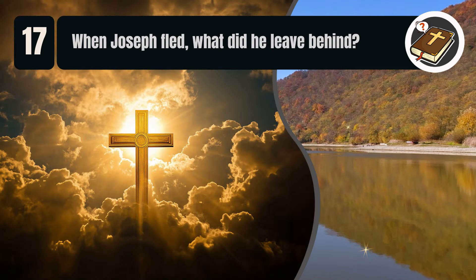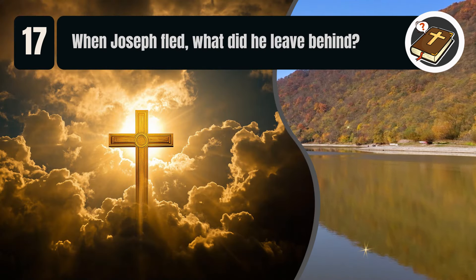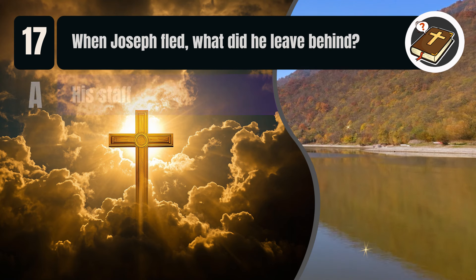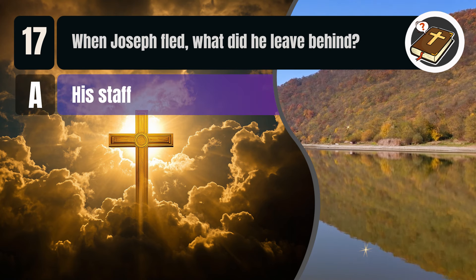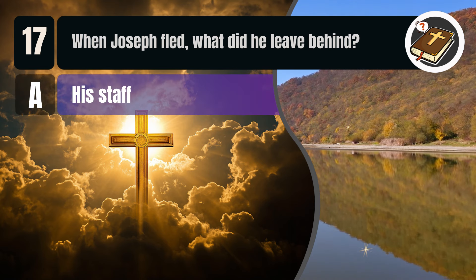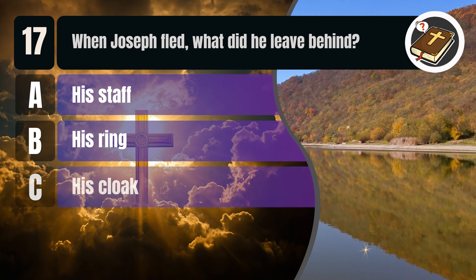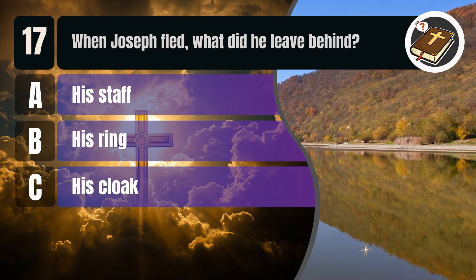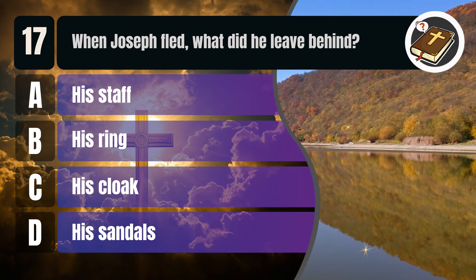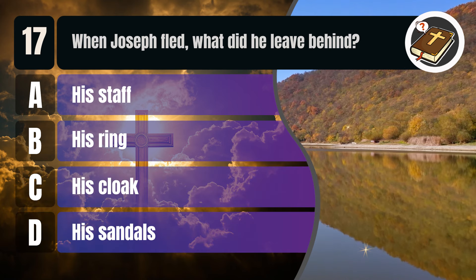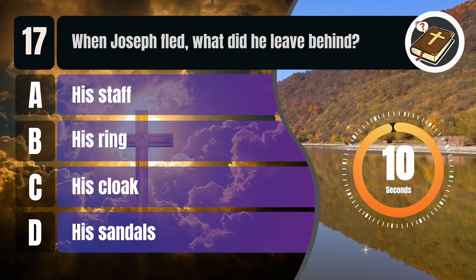Question 17. When Joseph fled, what did he leave behind? A. His staff. B. His ring. C. His cloak. D. His sandals.